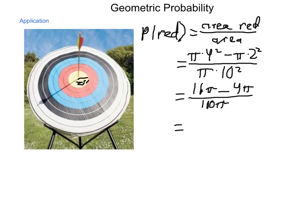16 pi minus 4 pi is 12 pi divided by 100 pi. Our pi's will simplify away. So what we're left with is 12 one hundredths. Both these items can be divided by 4, so we end up with 3 twenty-fifths or 12%. 12% of the overall area of this bullseye or this target is the red section.